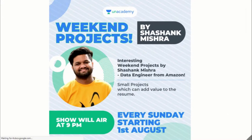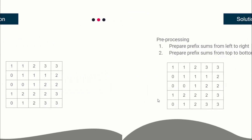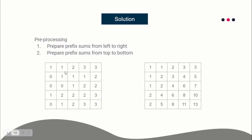Now let's do the first step: preprocessing prefix sum from left to right. For each row we will convert it into a prefix sum — processing from left to right. You can see the prefix sum has been created for the first row, second, third, fourth, and fifth. Pause the video and check it out.